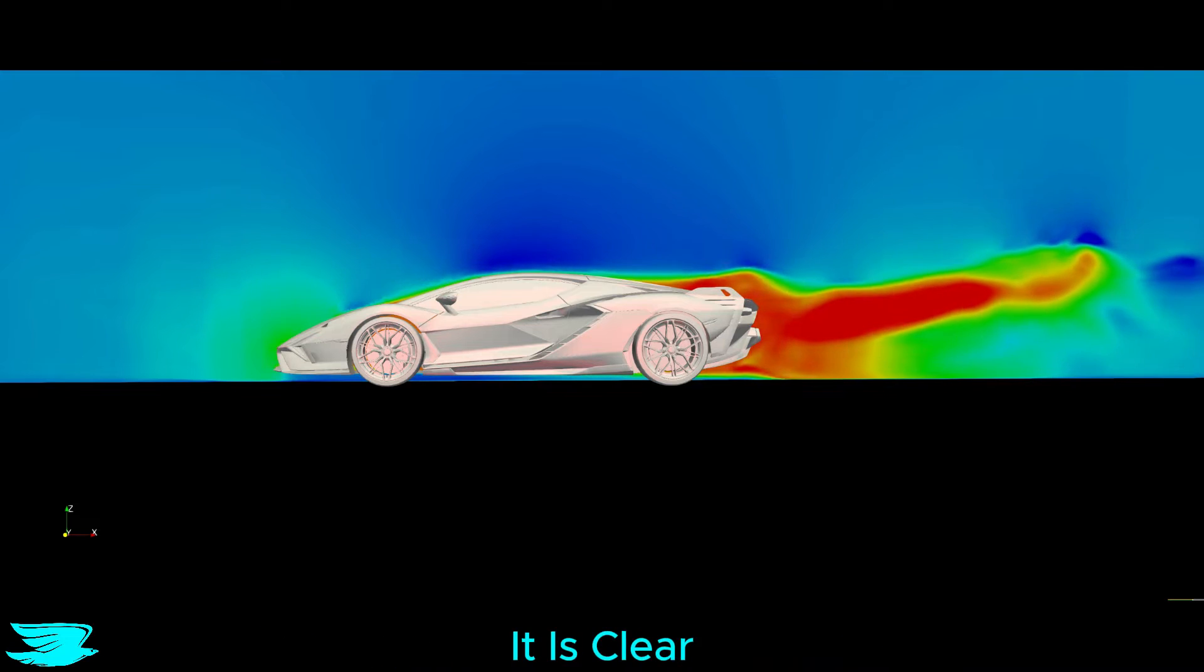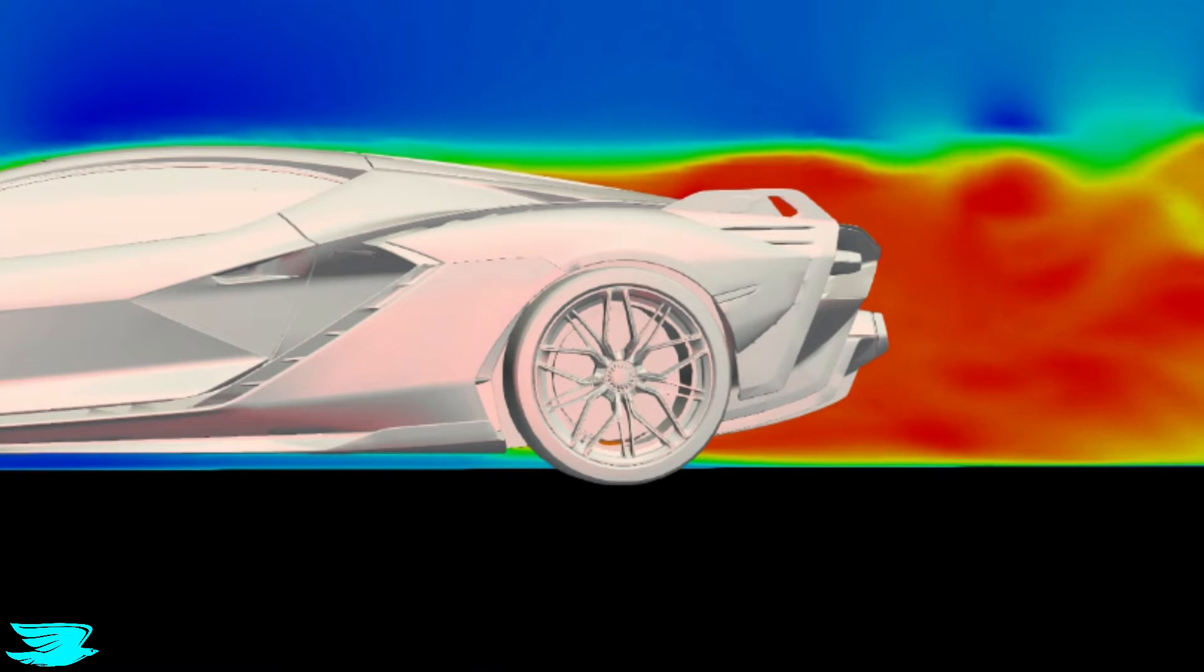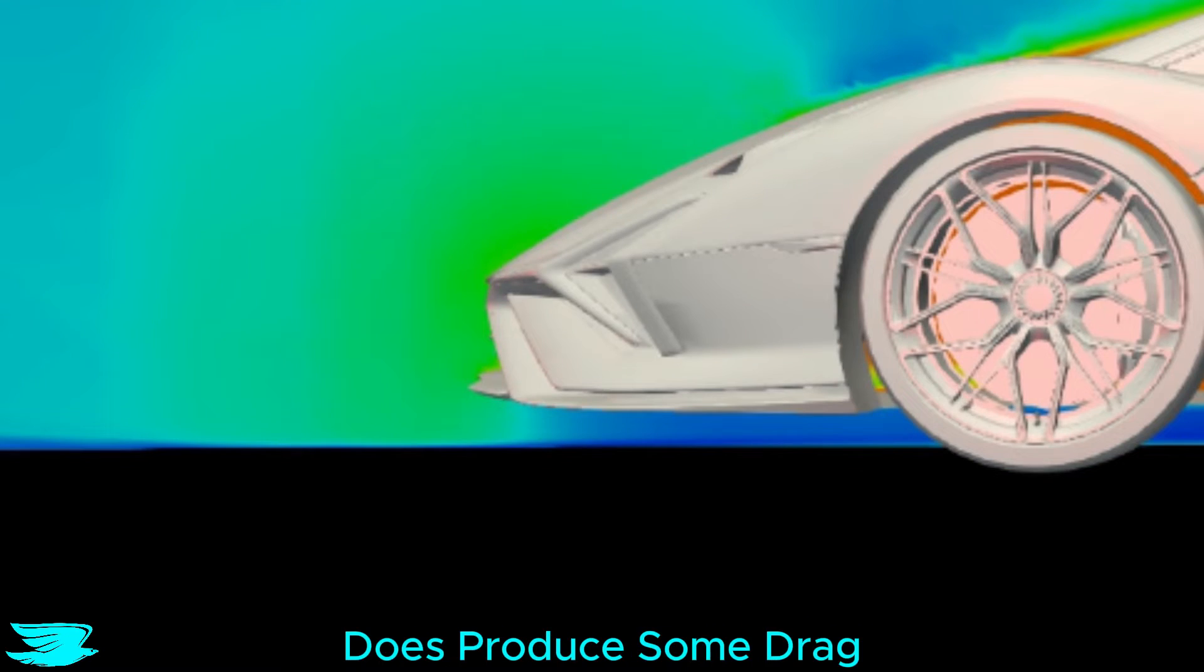Looking at the drag over the car, it is clear that the only region producing substantial drag is the rear quarter of the car, which is due to the premature flow separation we saw earlier. The nose of the car does produce some drag, but it's okay. And the underbody is really reducing the drag because of its low clearance.